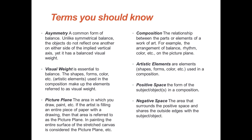Artistic elements are elements such as shapes, forms, and colors that are used in a composition. Positive space is the form of a subject or object in a composition. Negative space is the area that surrounds the positive space and shares the outside edges with that subject or object.